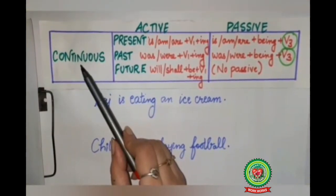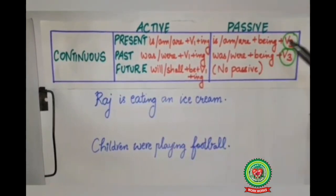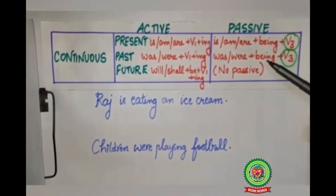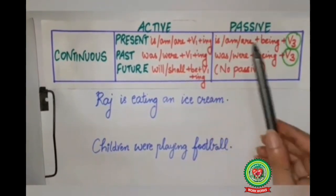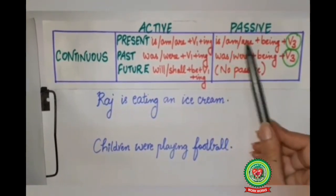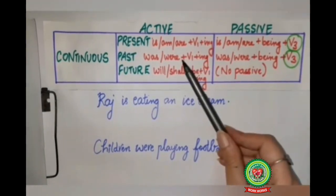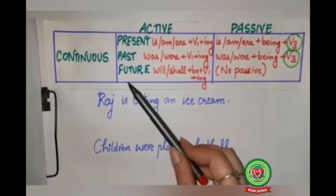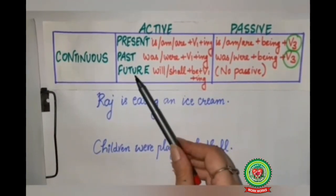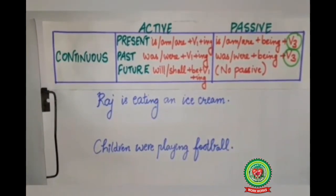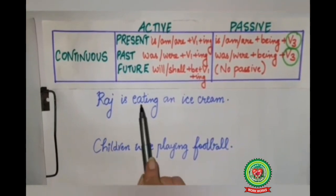Now we will discuss Rule 4. If your active voice is given in continuous tense, then while changing it into passive we will add the word 'being'. So 'is/am/are + V1 + ing' will change to 'is/am/are + being + V3'. Similarly for 'was/were' also. But there is no passive form of future continuous.